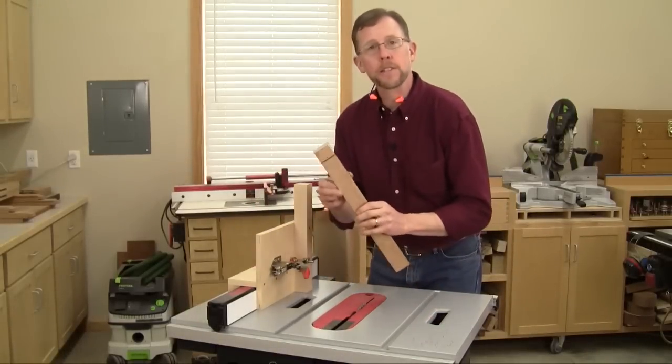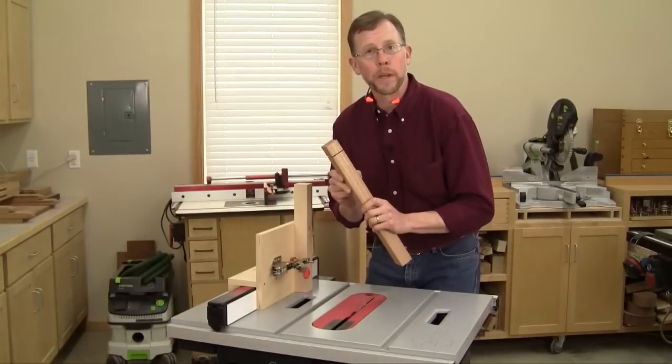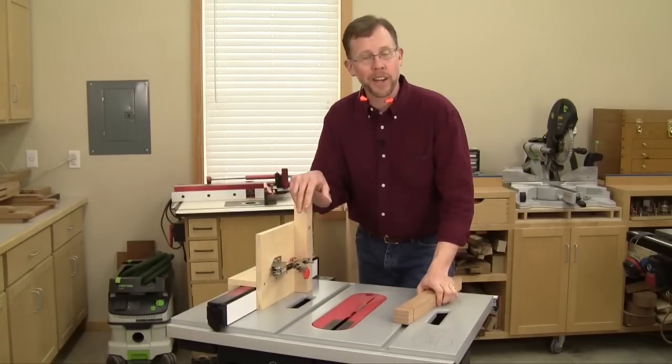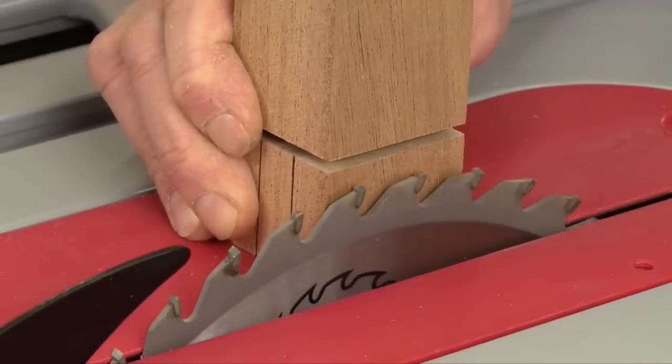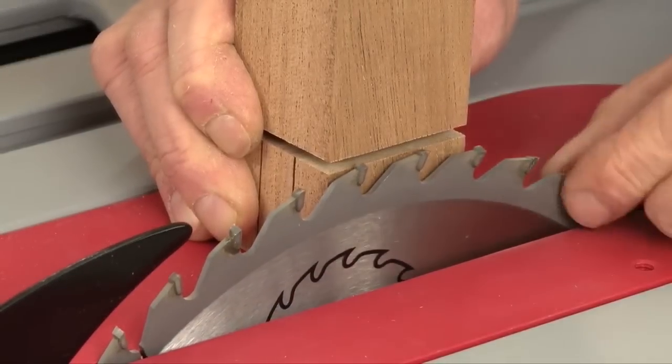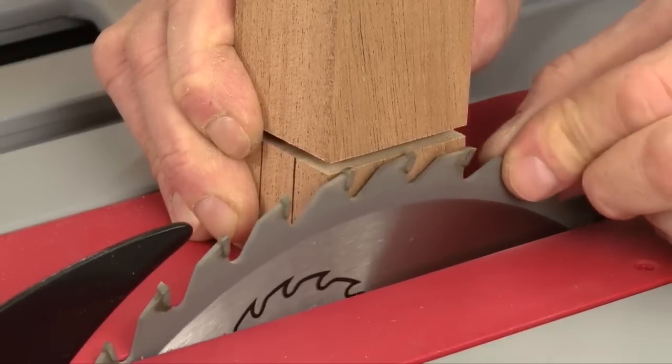So now your shoulder cuts are all the way around your work piece, and it's time to make the cheek cuts with your tenoning jig. The first step in the process is to raise the blade until it just meets your shoulder cuts.